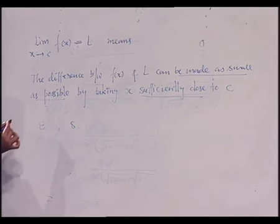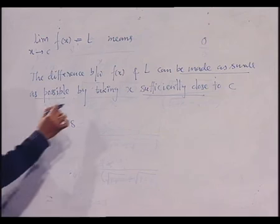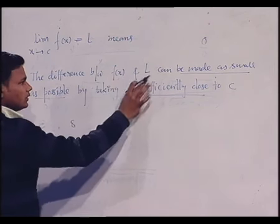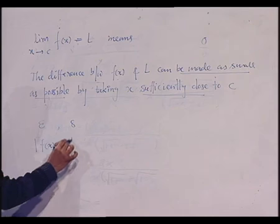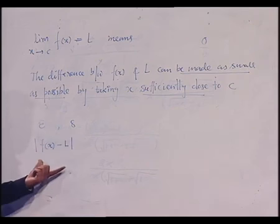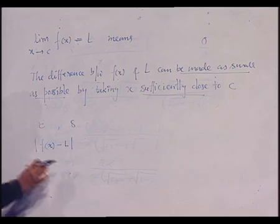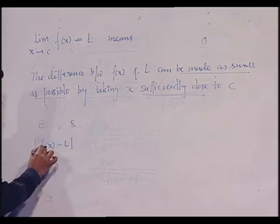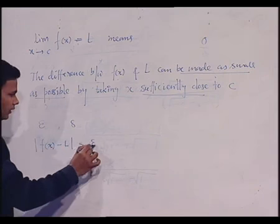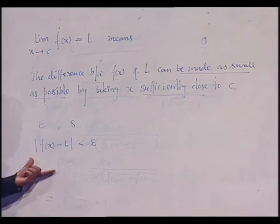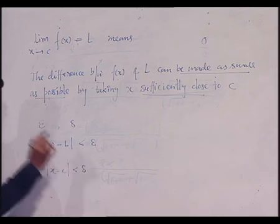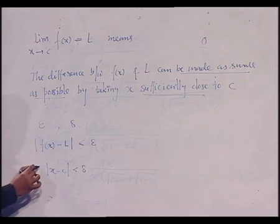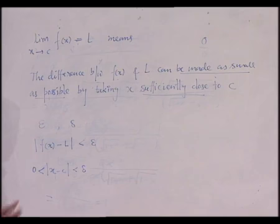You know how to represent the difference between two numbers. So f(x) and l are two real numbers, and their difference can be represented as |f(x) − l|. So this difference being small means |f(x) − l| < ε. And x sufficiently close to c means |x − c| < δ, with x not equal to c, so we take this difference to be positive.